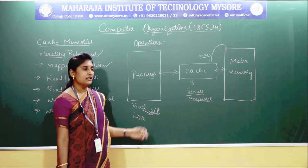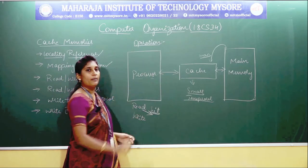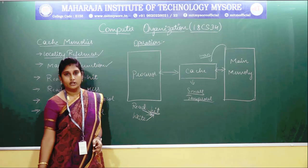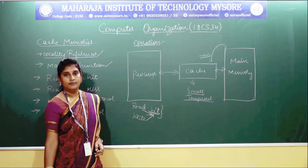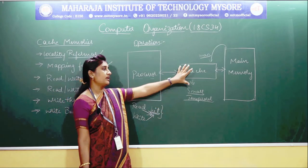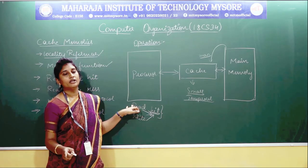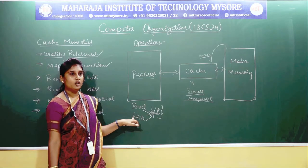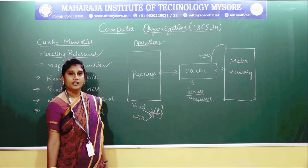If the operation is write — that is, the processor wants to write data to a particular cache memory location and if that location is found in your cache — you will be calling it a write hit. So if the requested data is present in cache, you call it a hit, and whatever operation you carry out, whether read or write, you will be calling it read hit or write hit.